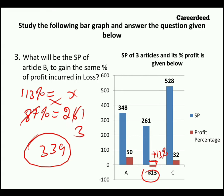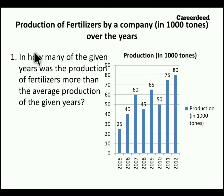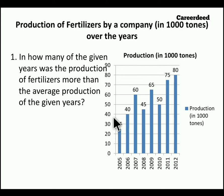Now moving to the second model of the session. This model is similar to the first, but here the production of fertilizers by a company over the years is given. Each data is given in the unit of 1000 tons. In 2005, production is 25,000 tons; in 2006, 40,000 tons; in 2007, 60,000 tons; in 2008, 45,000 tons; in 2009, 65,000 tons; in 2010, 50,000 tons; in 2011, 75,000 tons; and in 2012, 80,000 tons. You are provided with 8 years of data.